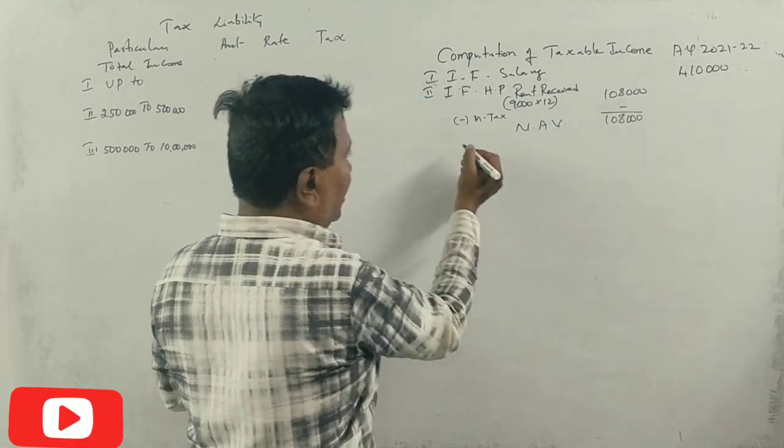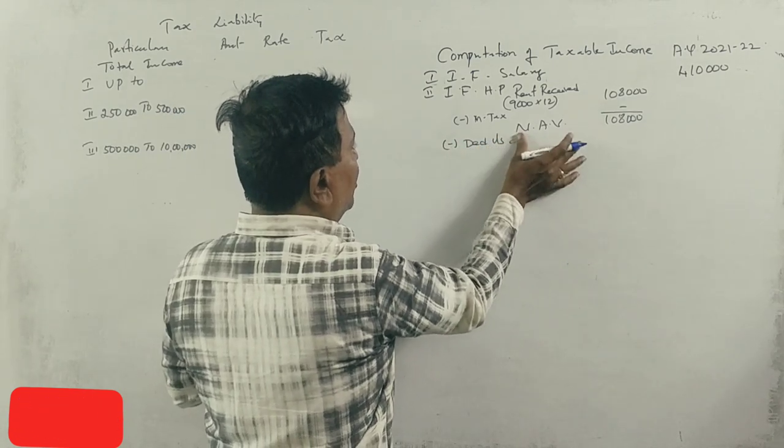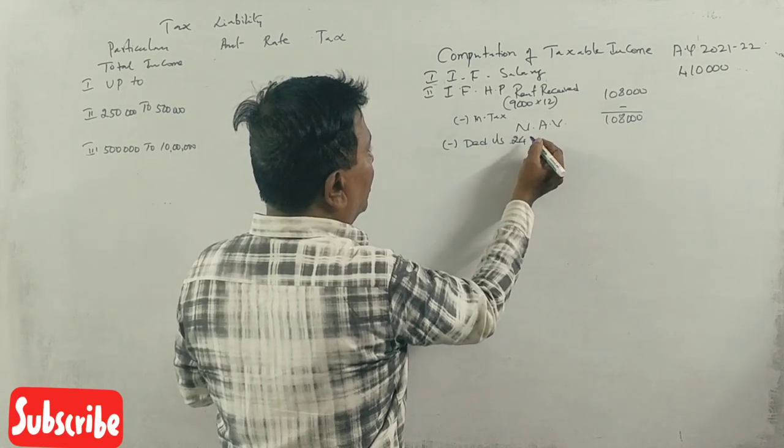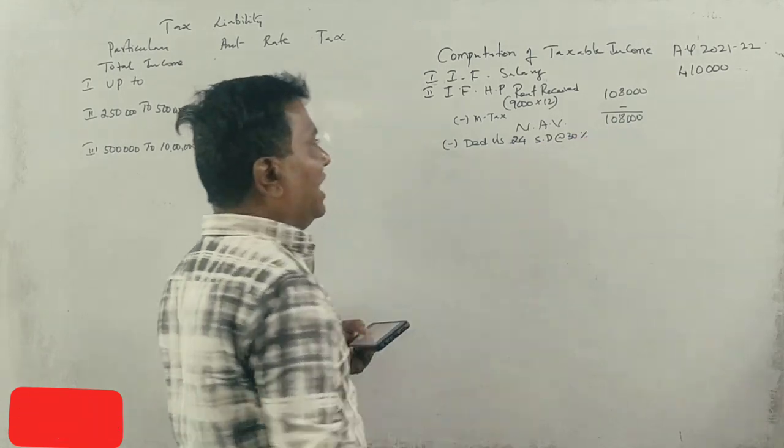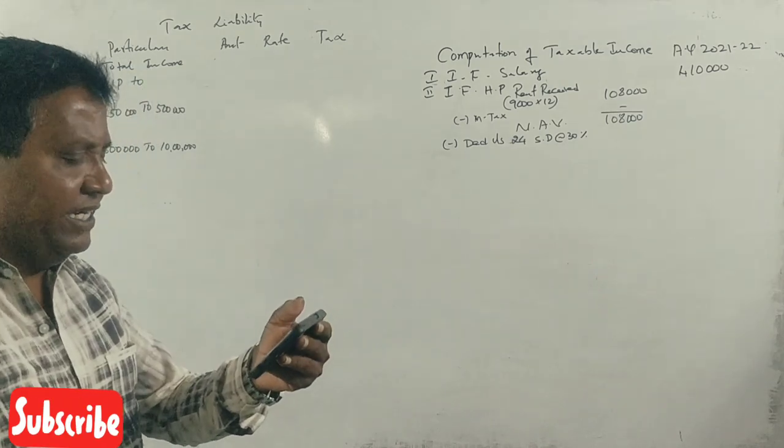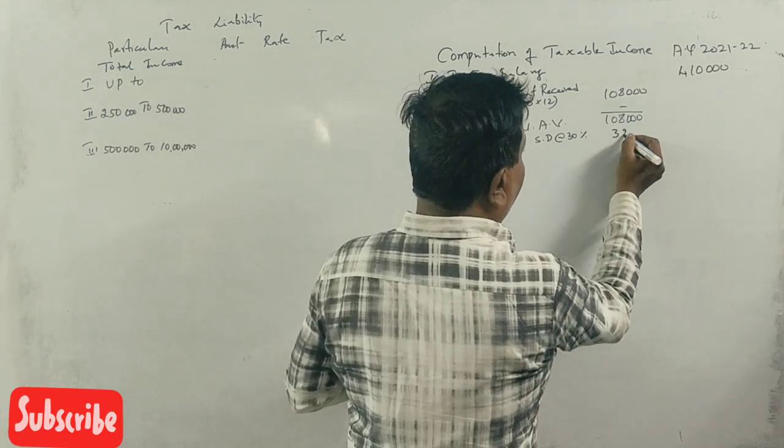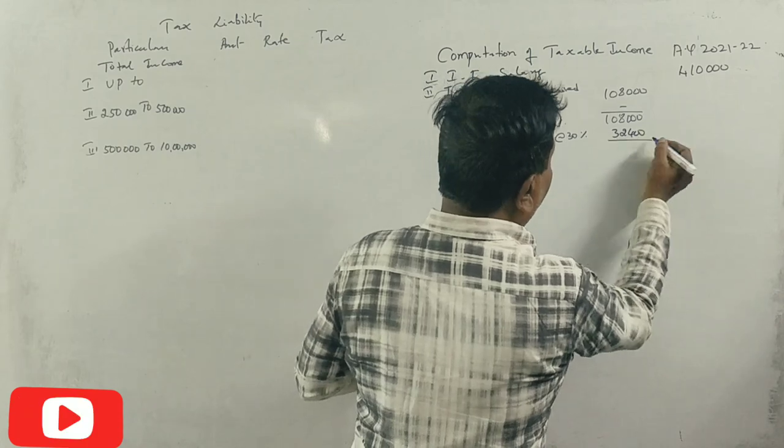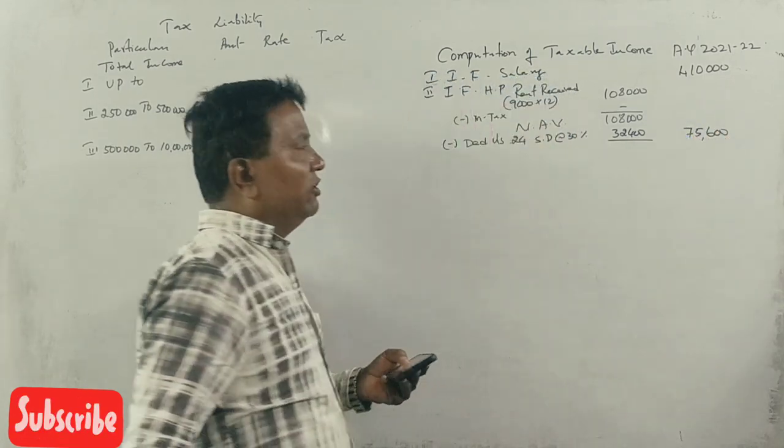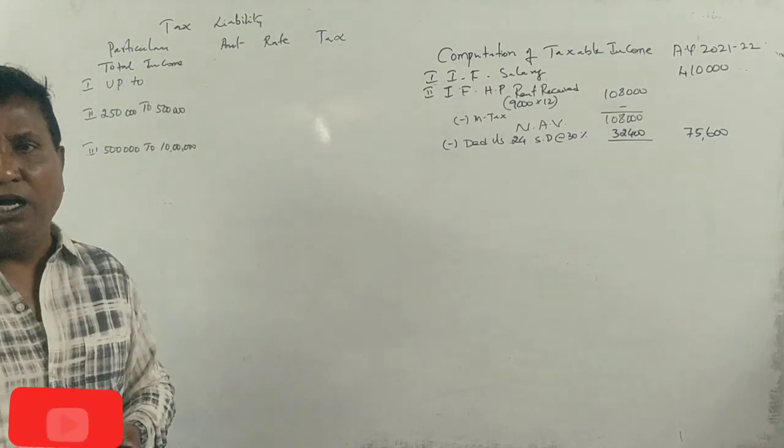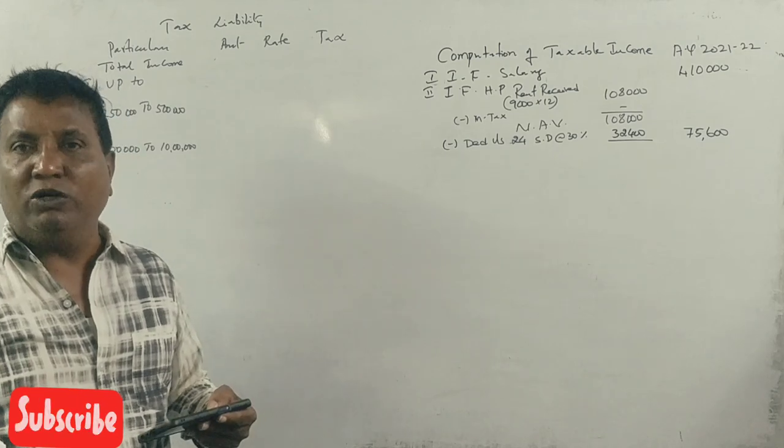Either there is no municipal taxes, so 1,08,000 is the income from house property, the net annual value. Now take deduction under Section 24, standard deduction 30 percent of 1,08,000. 30 percent is 32,400 rupees. After deduction, the income from house property is 75,600.